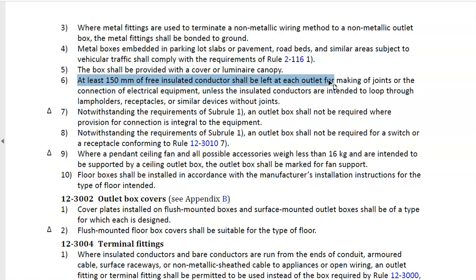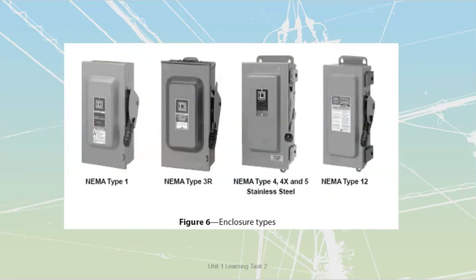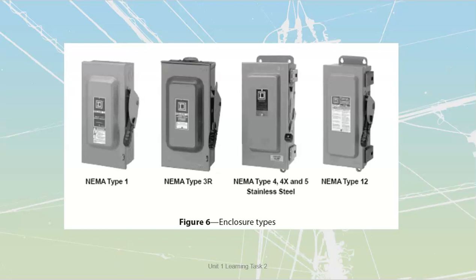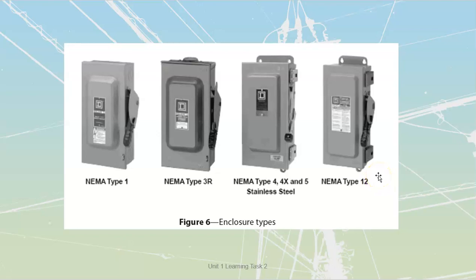Now let's talk about environmental characteristics. We have different NEMA classifications for switches: Type 1, 3R, 4, 4X, 5, and NEMA 12, which are increasingly robust and sealed against environmental ingress. NEMA 1 enclosures have knockouts, while weatherproof types require threading in through hubs, and in many cases the category requires entry only from the bottom. When working with weatherproof equipment, always come up from the bottom rather than down from the top — it's much easier to drain water out than to try to stop it from getting in.